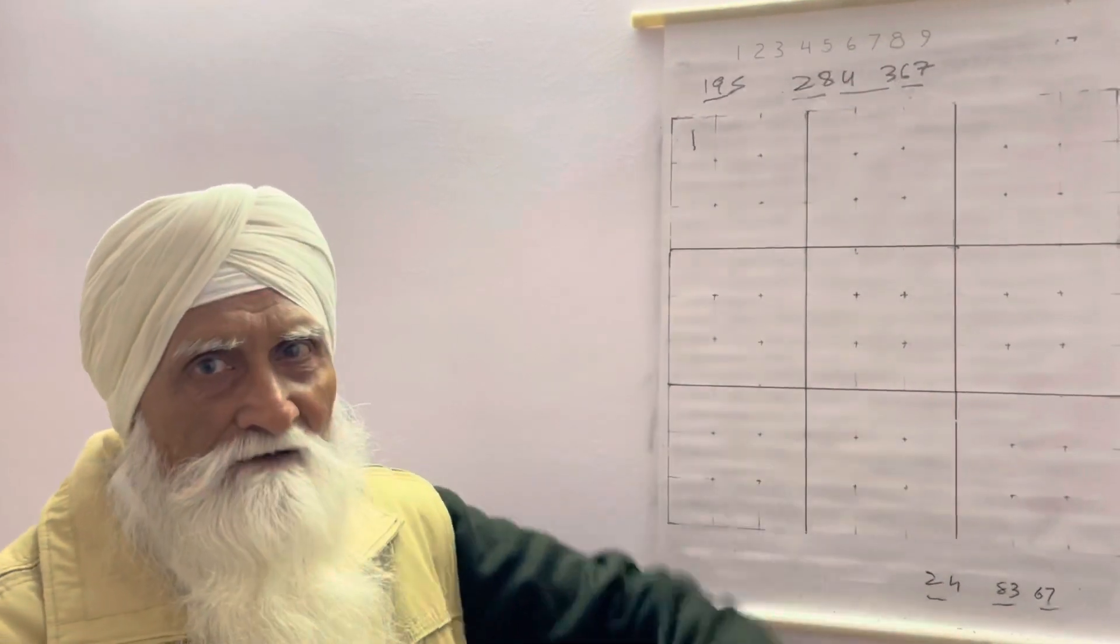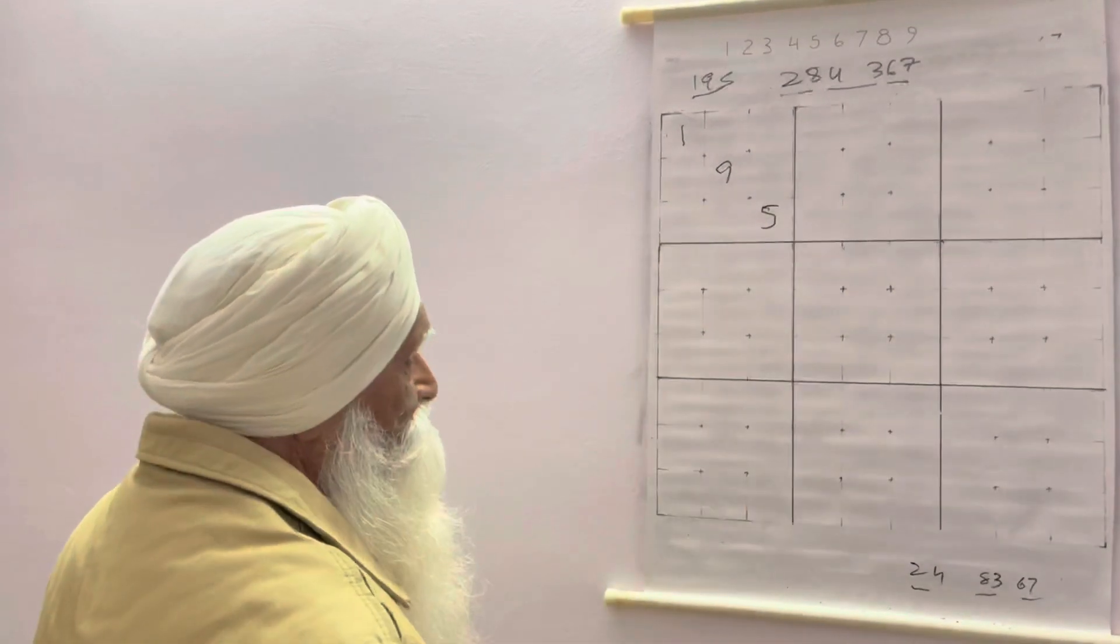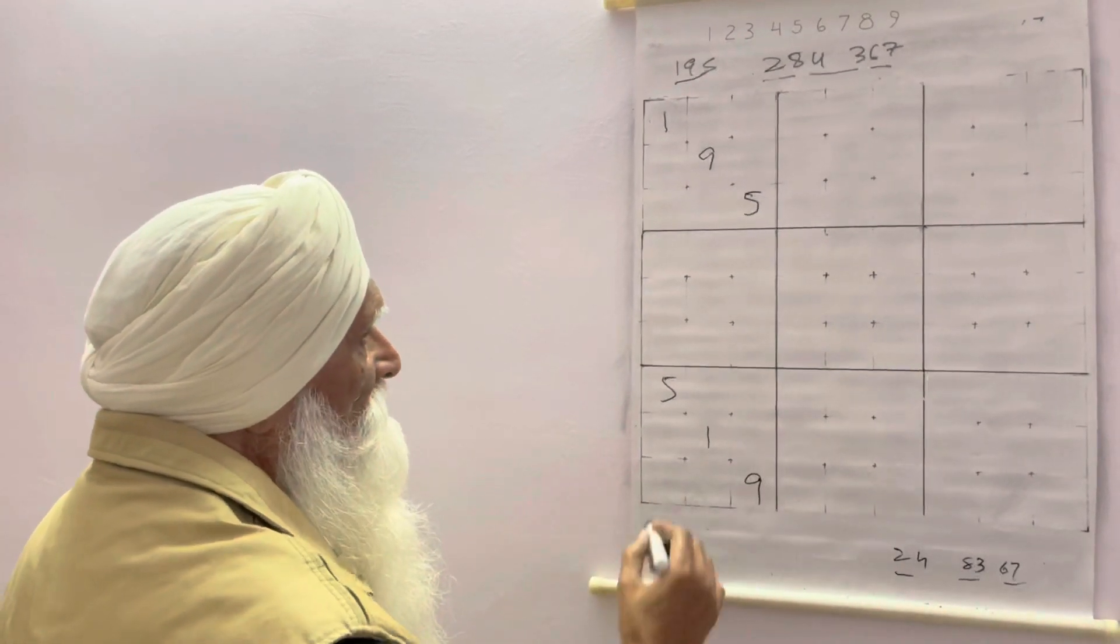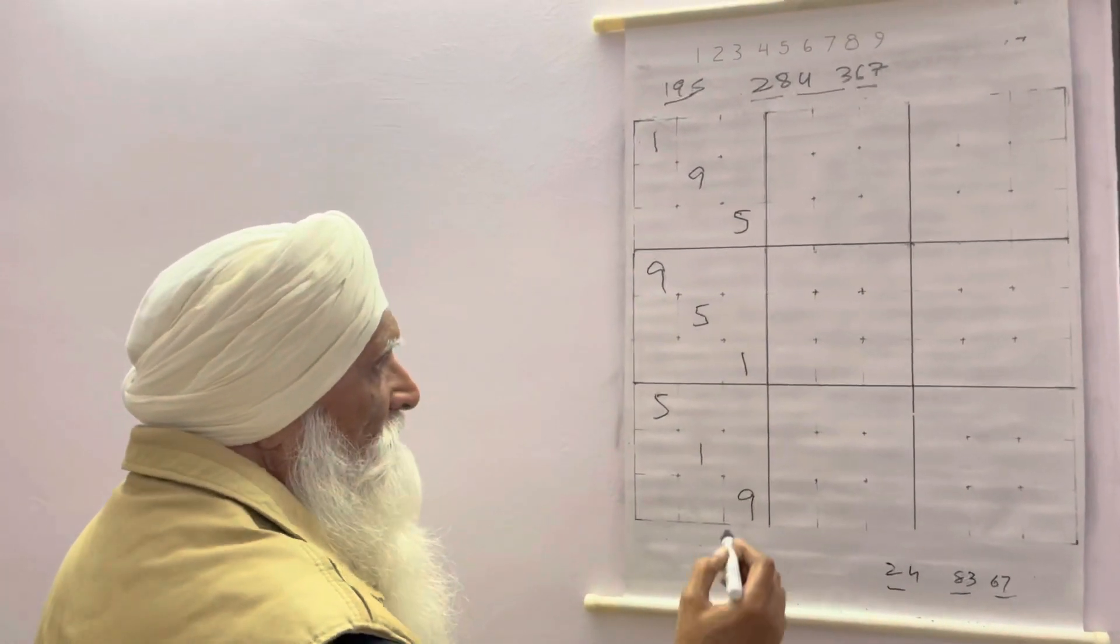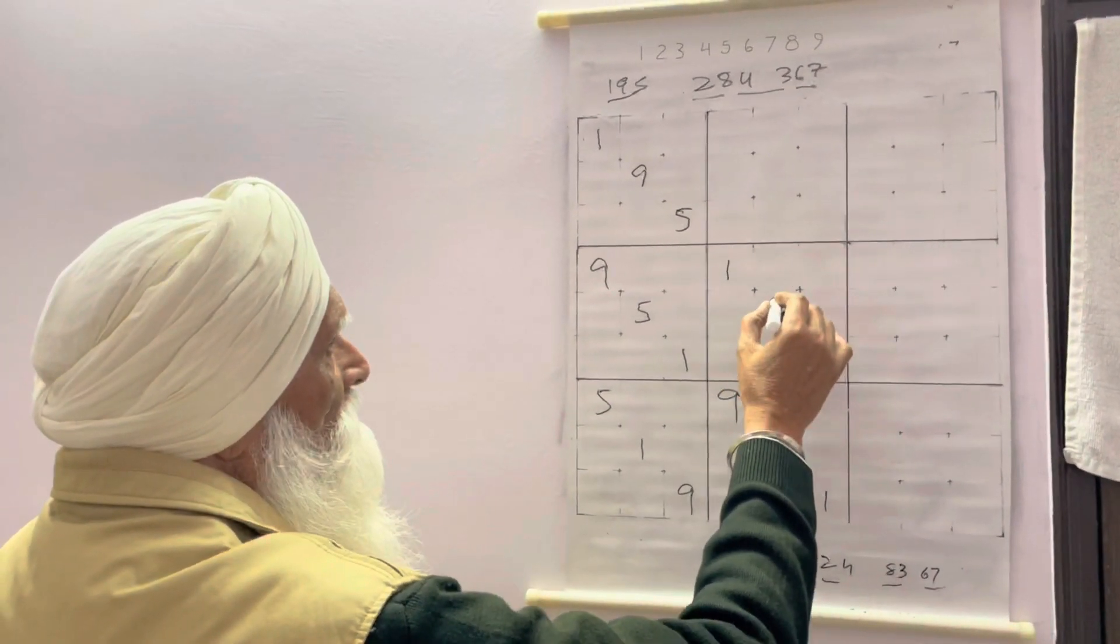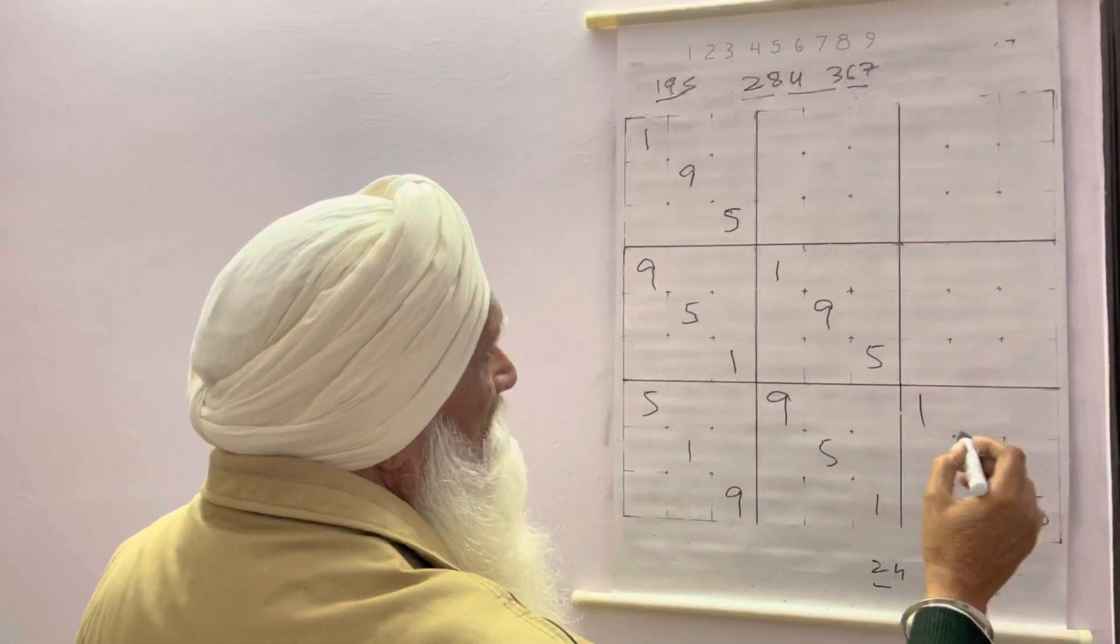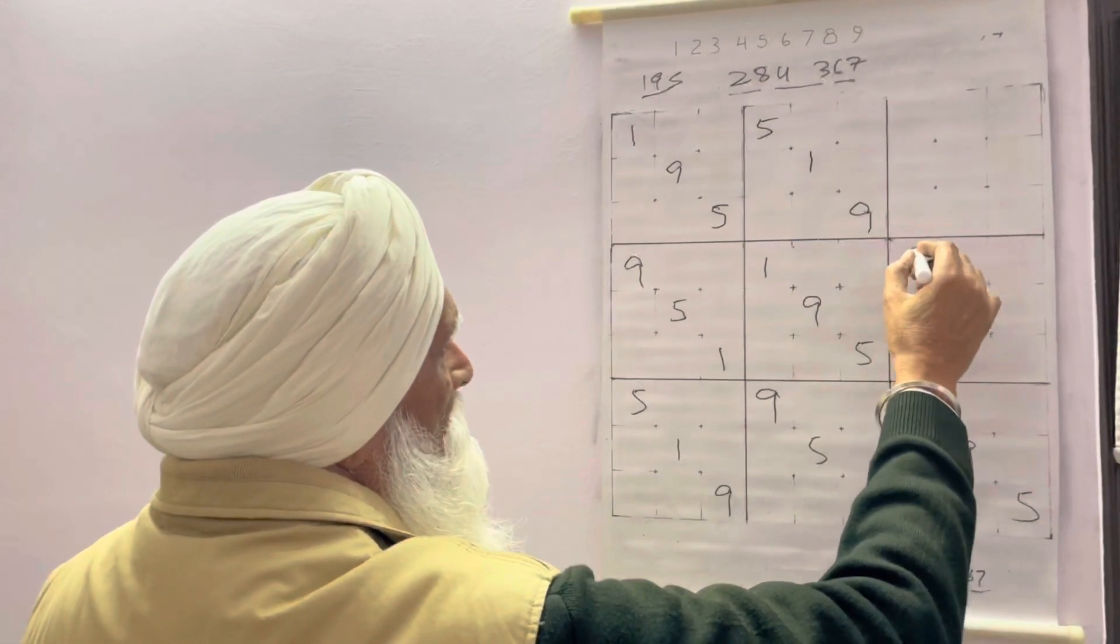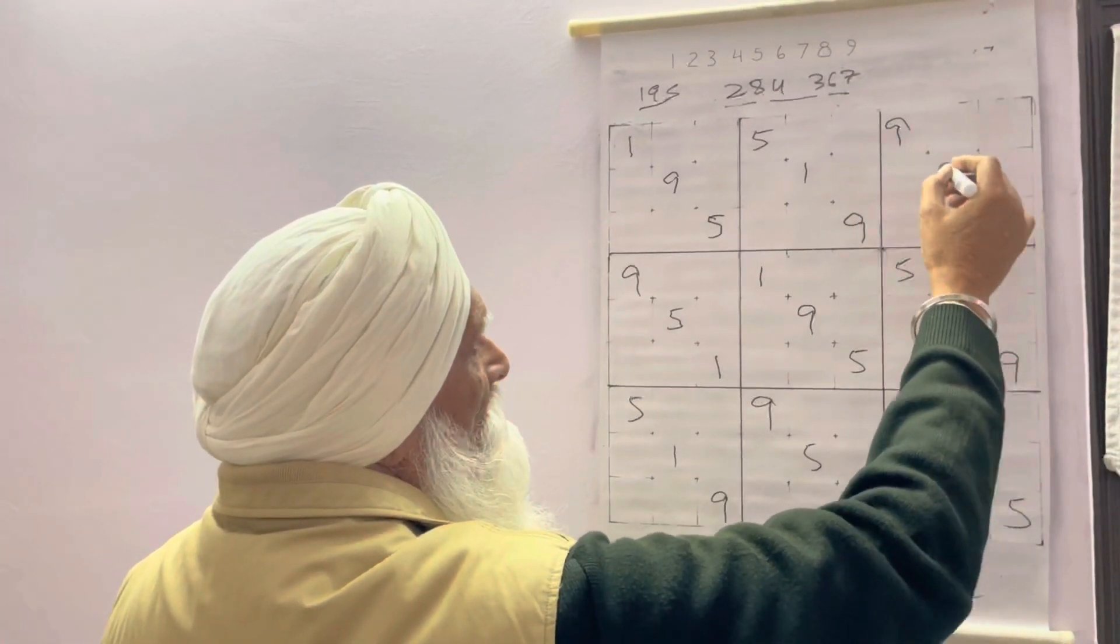2, 8; 4, 3; and 6, 7. We will write 1, 9, 5. Next is 5, 9, and 1. 5, 9, and 1. 9, 5, 1. 9, 5, 1. 5, 1, 9; 9, 1, 5.